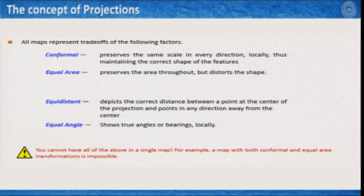There are many ways of projections, but in structural geology there are mostly four different ways we project maps: conformal, equal area, equidistant, and equal angle. All these four are somehow related to each other. In conformal projection, it preserves the same scale in every direction locally, thus maintaining the correct shape and features.